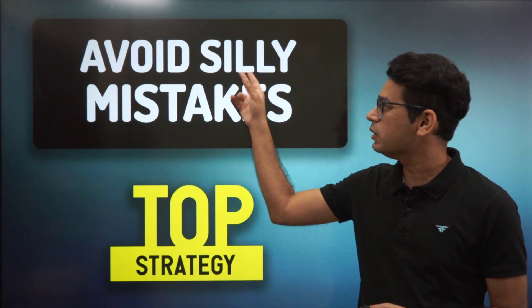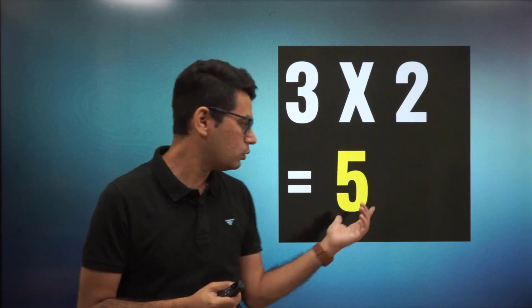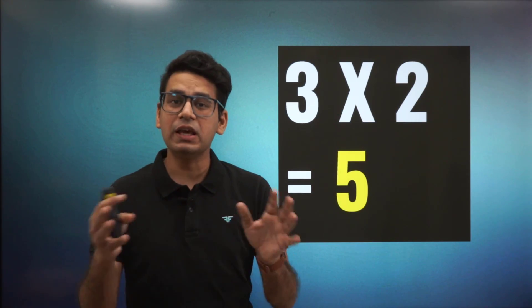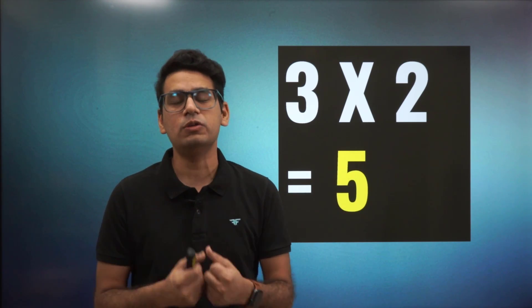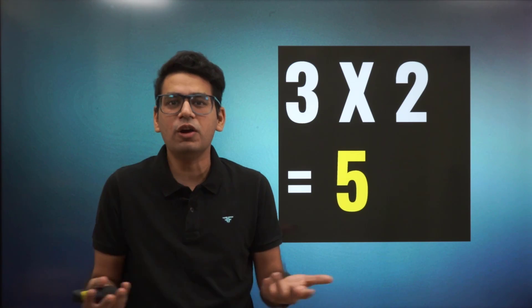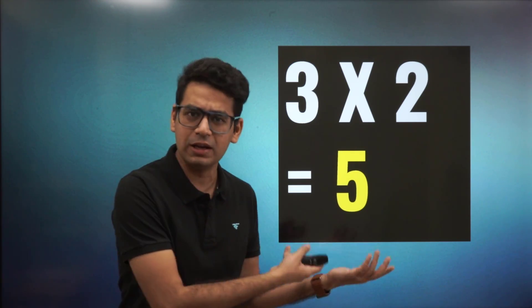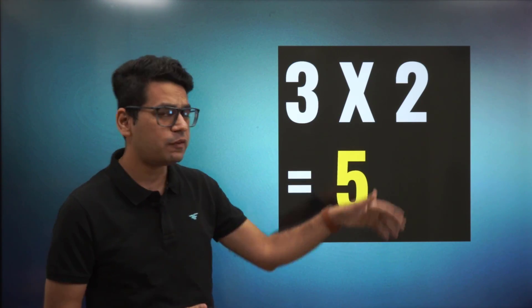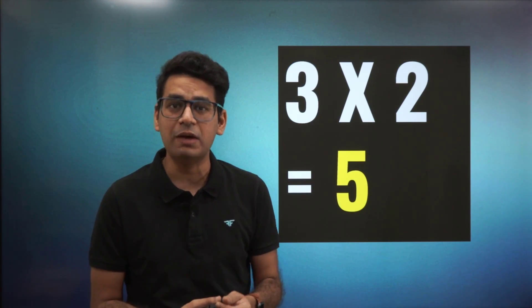Today we are going to talk about what happens when there is a silly error. Silly errors could be of many types — it could be 3 into 2, you write it equal to 5. This is a very bad error. Silly by definition means something that is intrinsically idiotic in nature. So if you have the wrong decision, that is a silly error. You will find these kinds of errors being repeated every day, not just at exams but every day.